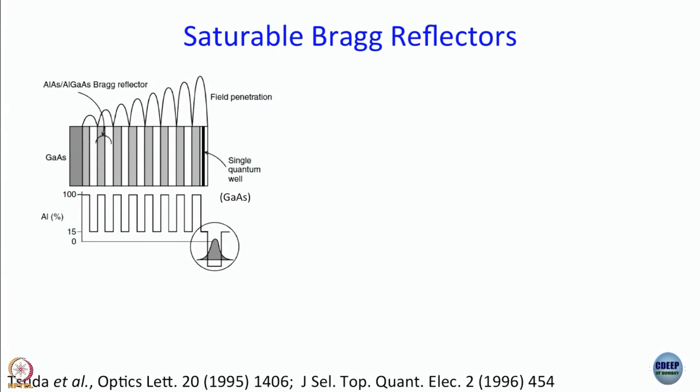Something that is used now very often is a passive mode locker — specifically, a saturable Bragg reflector, which acts as a saturable absorber and therefore as a passive mode locker. But I should explain what a saturable Bragg reflector is. Even before going there, I should tell you what a Bragg reflector is.